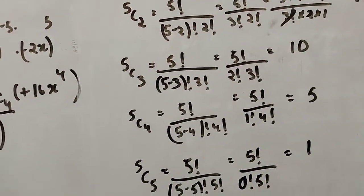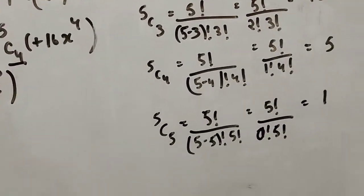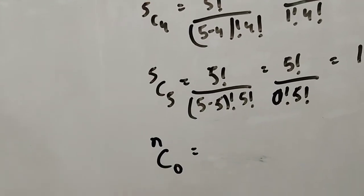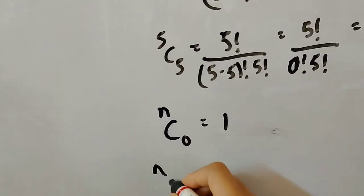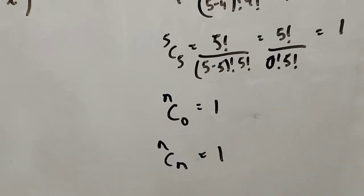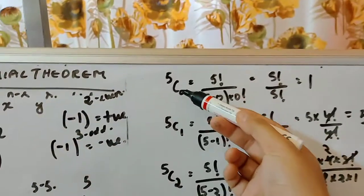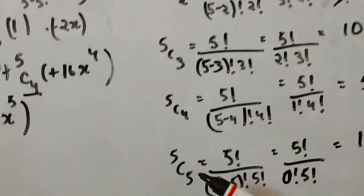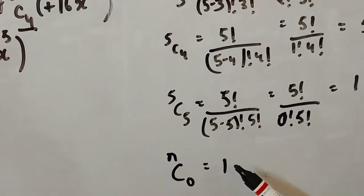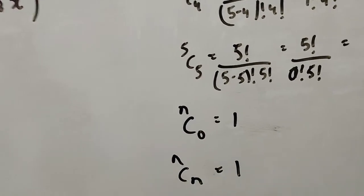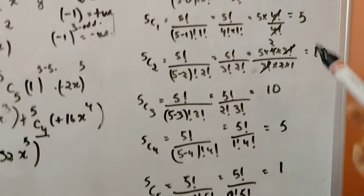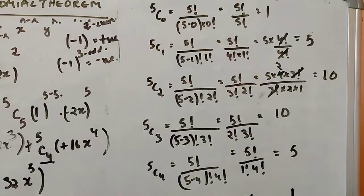The easiest thing to remember is: nC0 will always give 1, and nCn will always give 1. So 5C0 is 1 and 5C5 is 1. Don't waste time calculating these — simply replace the values.